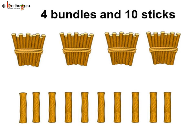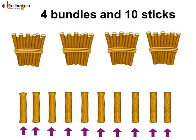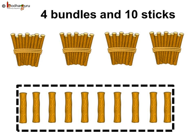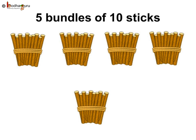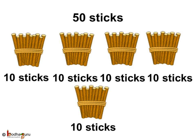What if there are 4 bundles of 10 sticks and 10 loose sticks? Let us make a bundle of the remaining 10 sticks. So there are 5 bundles of 10 — 10, 10, 10, 10, and 10 sticks. So 5 bundles of 10 sticks means 5 tens or 50.